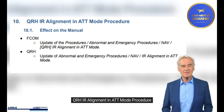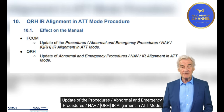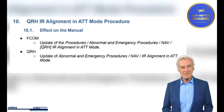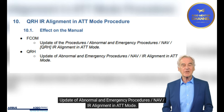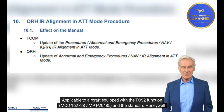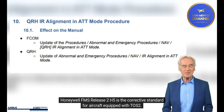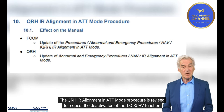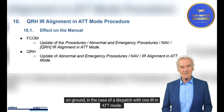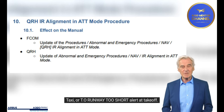QRH IRS Alignment in TT Mode Procedure. Effect on the Manual FCOM. Update of the Procedures: Abnormal and Emergency Procedures, NAV QRH IRS Alignment in TT Mode. Applicability: Applicable to aircraft equipped with the 2S2 Function, Mod 162728/MPP 20485, and the Standard Honeywell FMS Release 2H3. Honeywell FMS Release 2H5 is the corrective standard. Summary of the Modifications: The QRH IRS Alignment in TT Mode Procedure is revised to request the deactivation of the TOSURV function on ground in the case of a dispatch with IRS in TT Mode, to prevent possible cases of spurious 'TO Runway Too Short' alerts during taxi or takeoff.